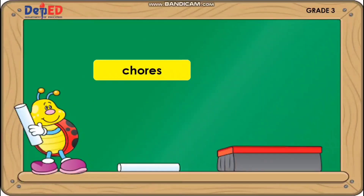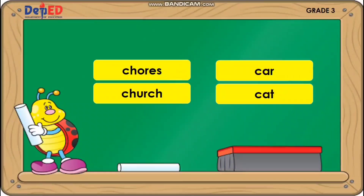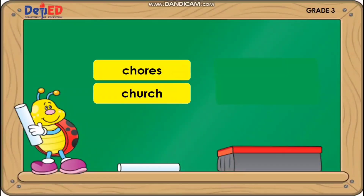Chores. Church. Car. Cat. Which words have consonant digraphs? Brilliant — Chores and Church.